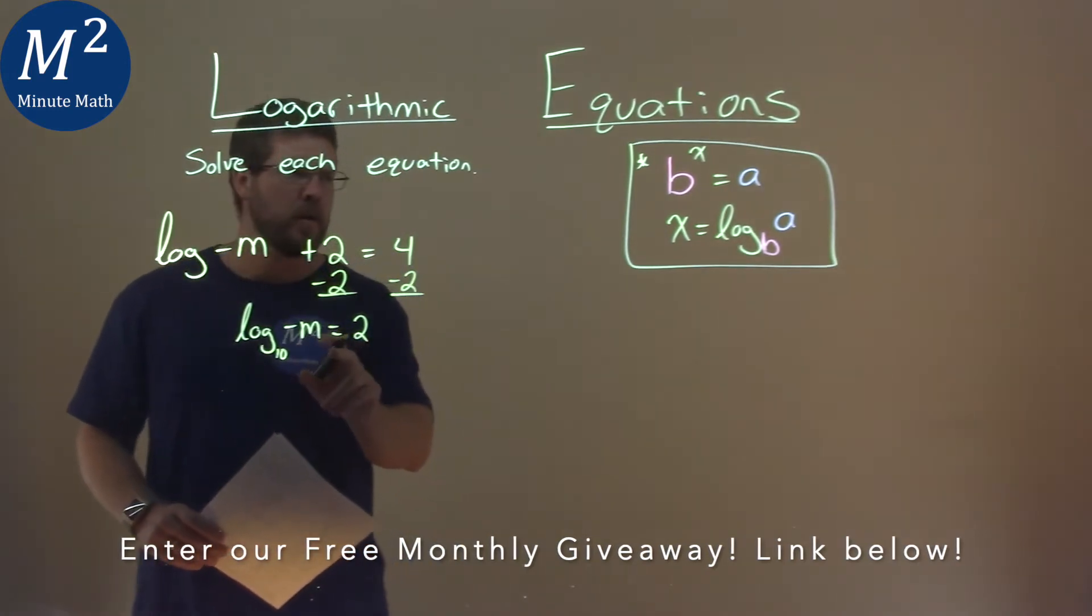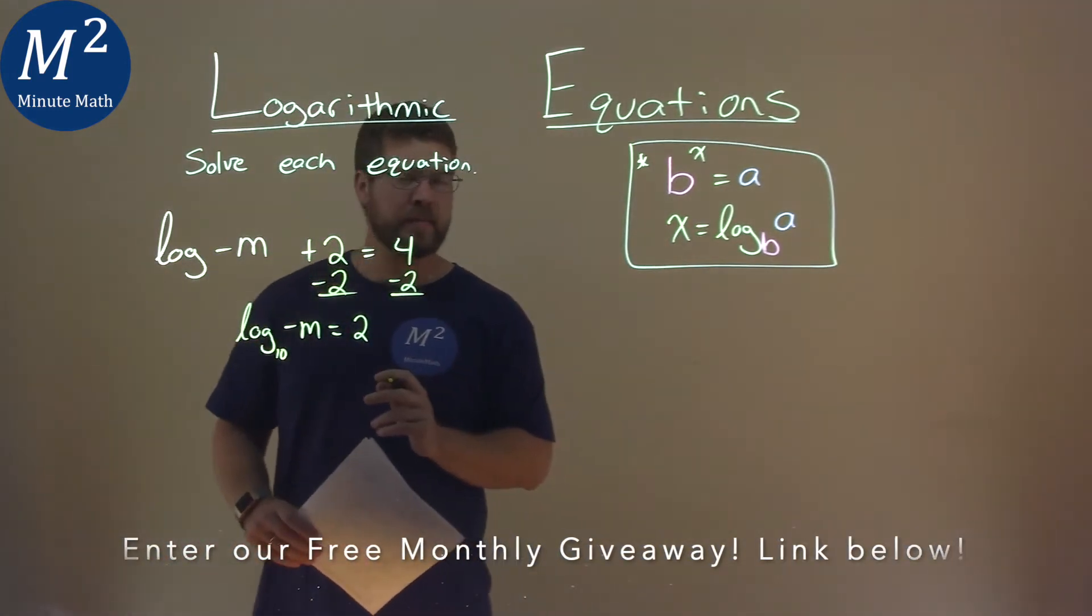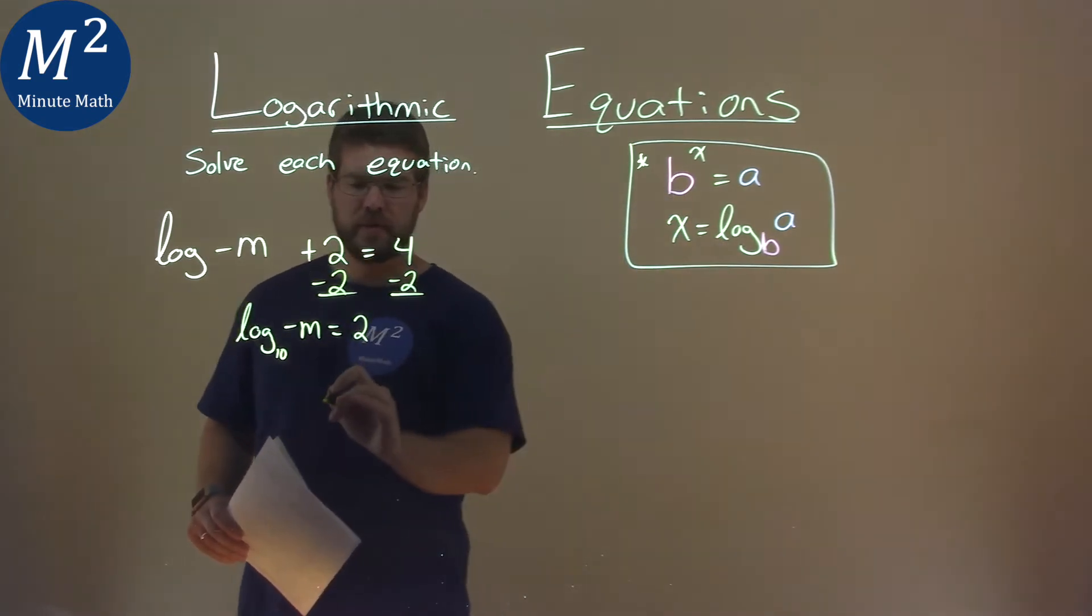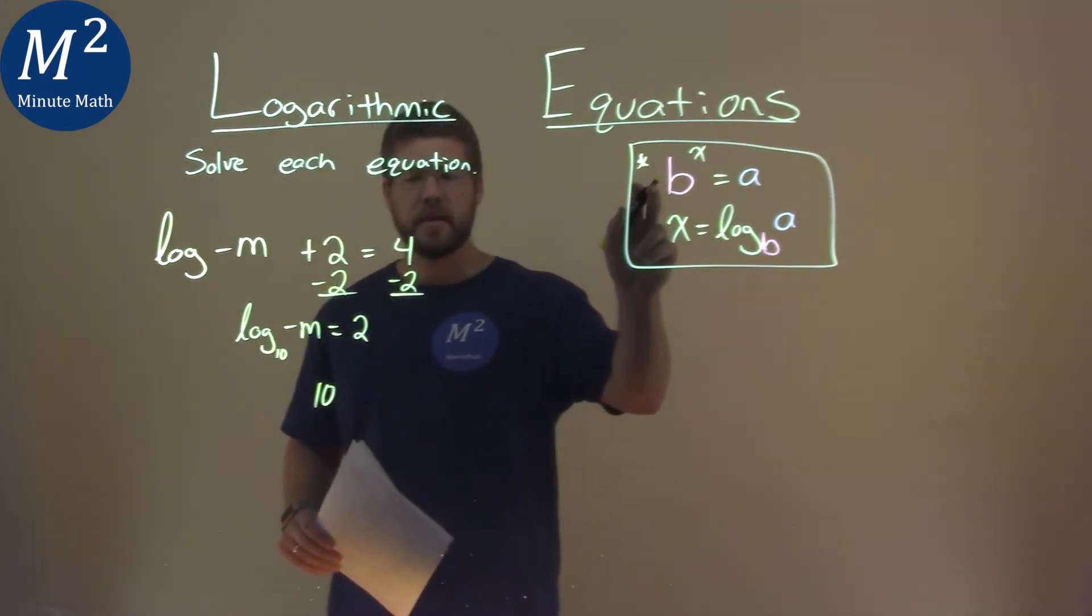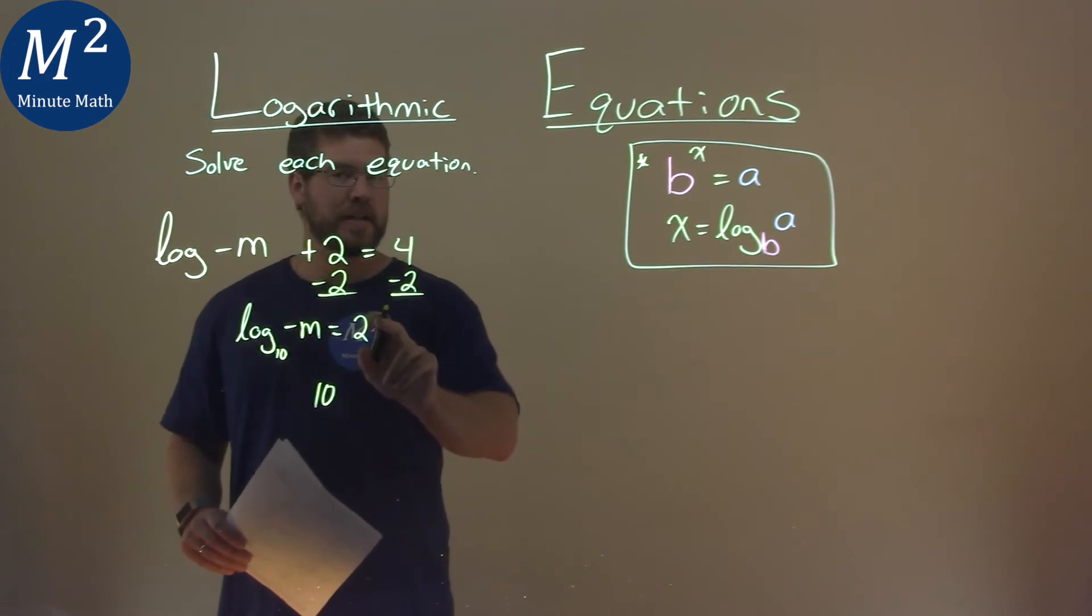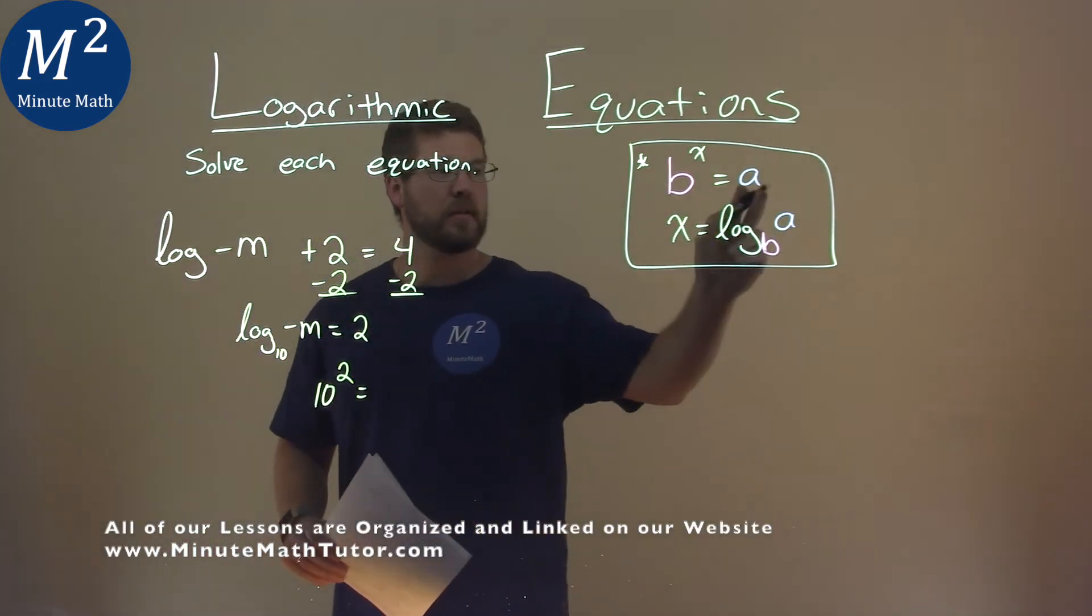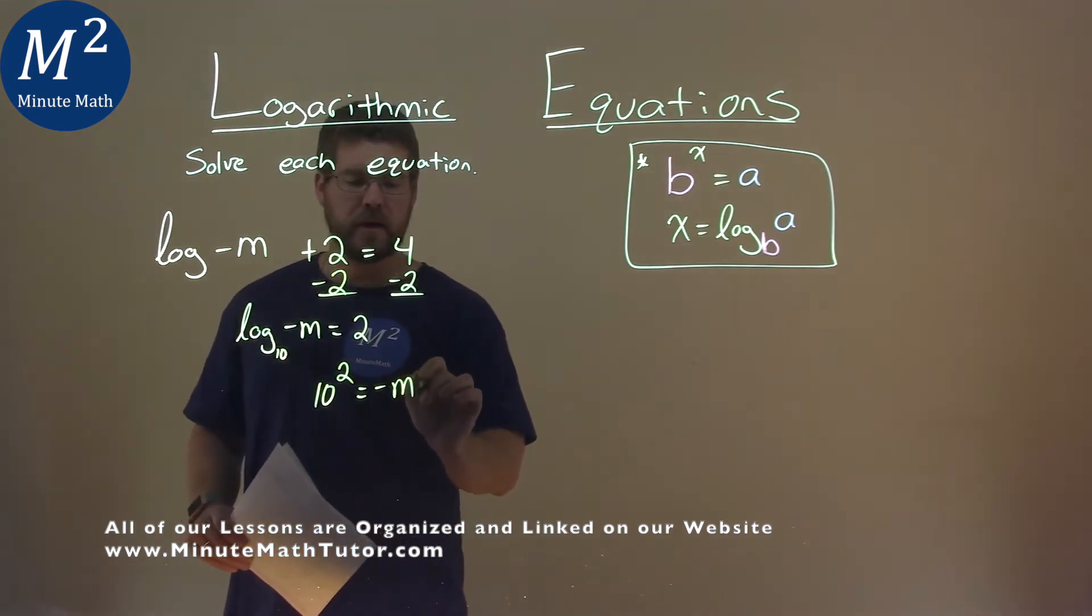Where do we go from there? We're going to have to use our little formula here. Our base is a 10, so that's going to be that b value. So we have 10 here. We can convert it to the x is what this is right here, that 2, is equal to our a value, what's inside the logarithm, which is negative m.